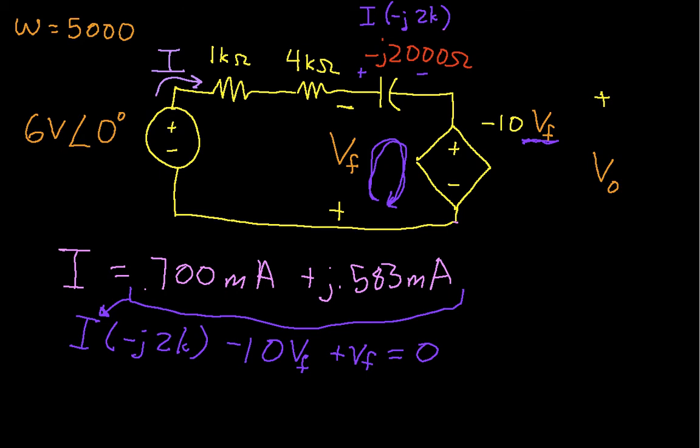We can take this and plug it in here. And when we do that, we'll take these guys, move them over to this side of the equation, so we'll have 9 Vf is equal to this expression for I times negative J2k. So let's do that computation.